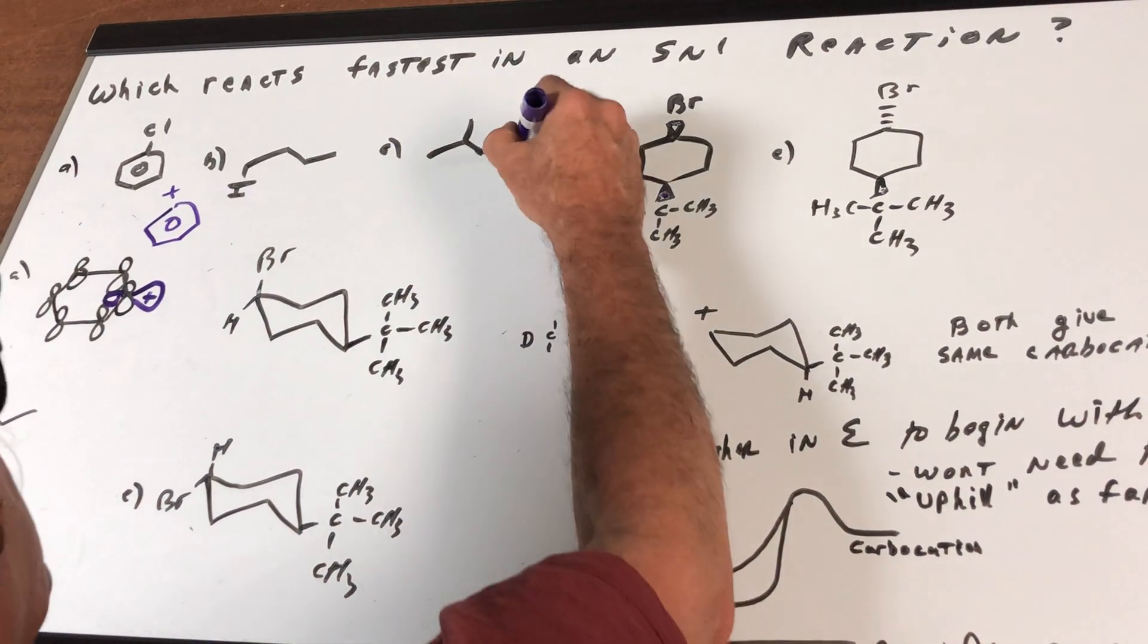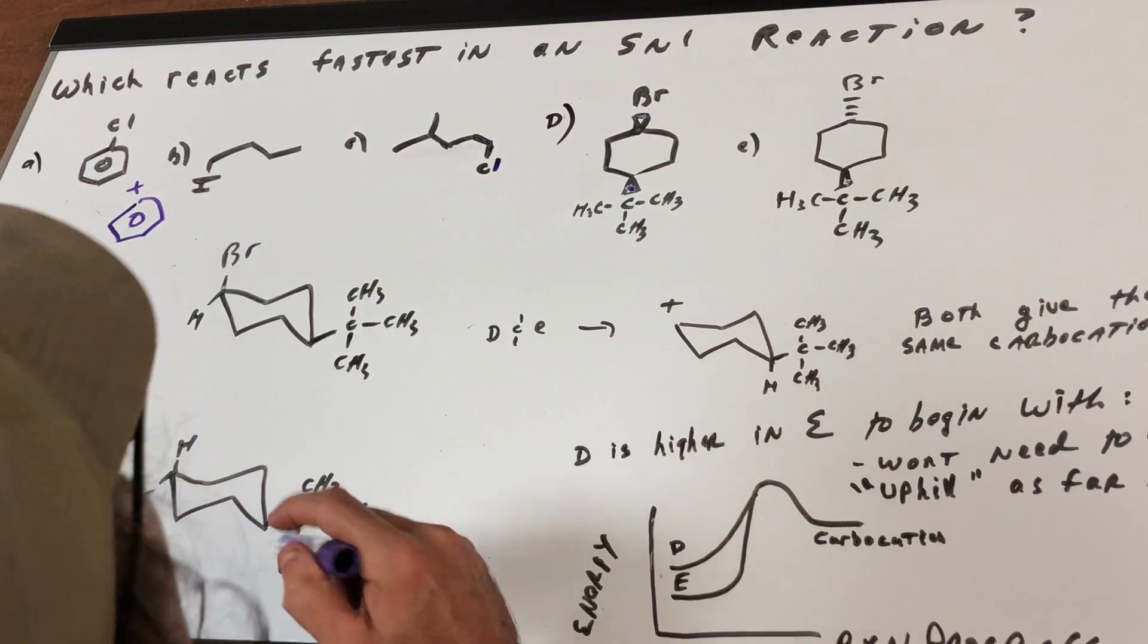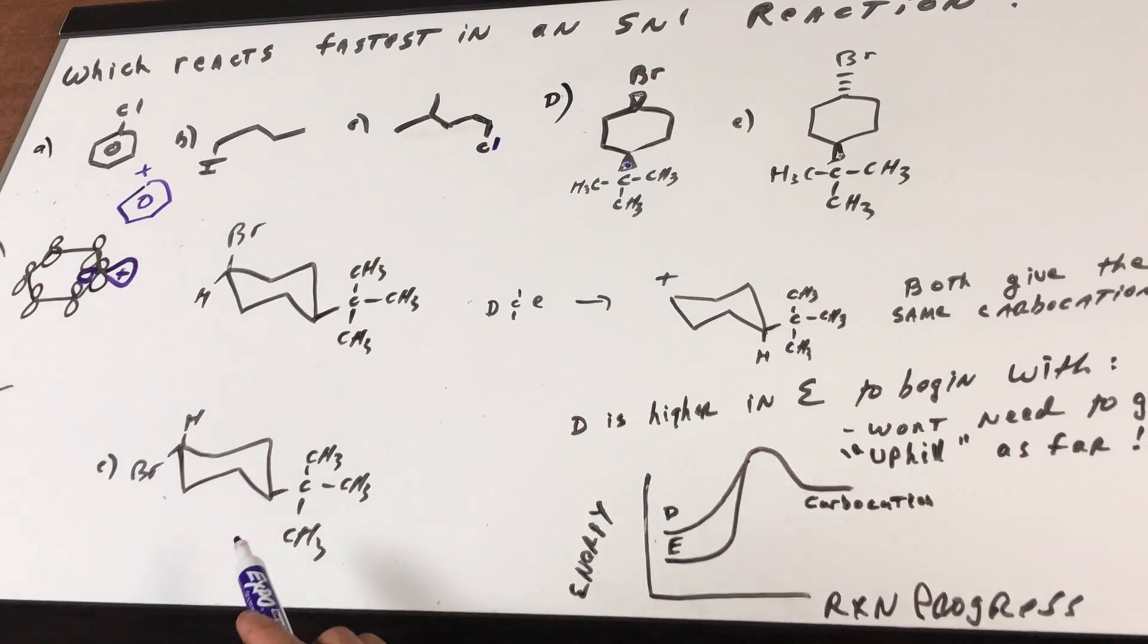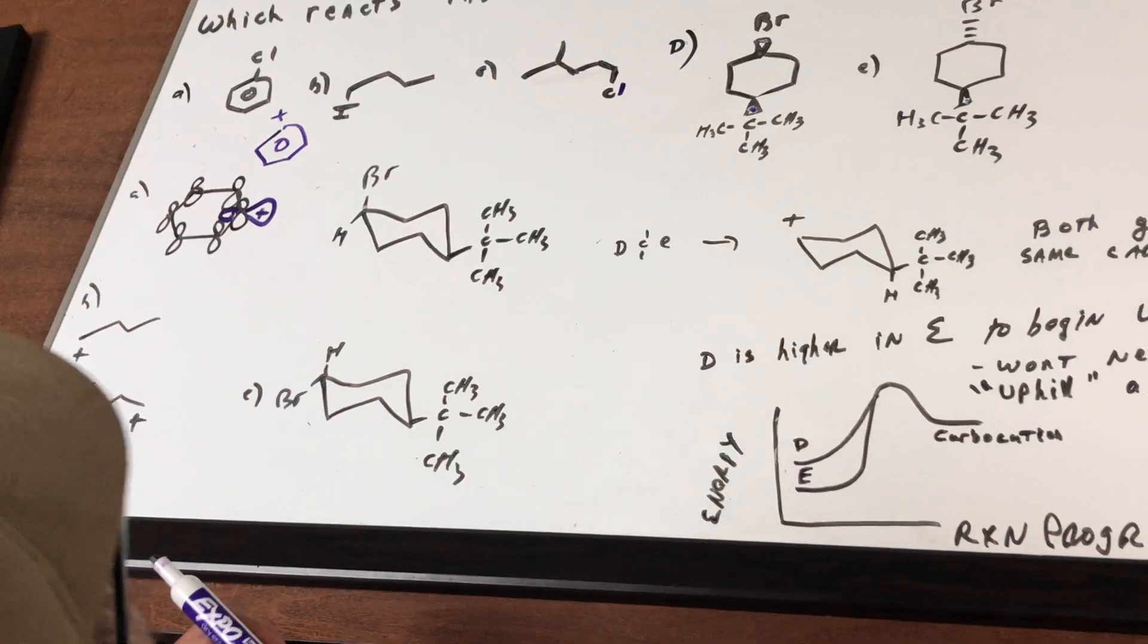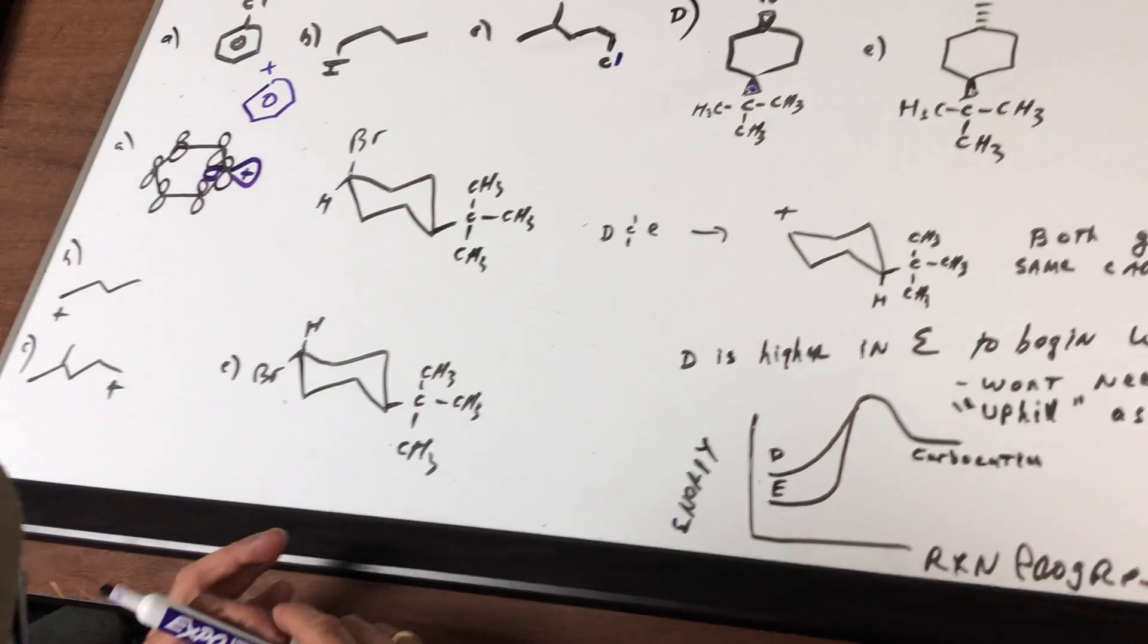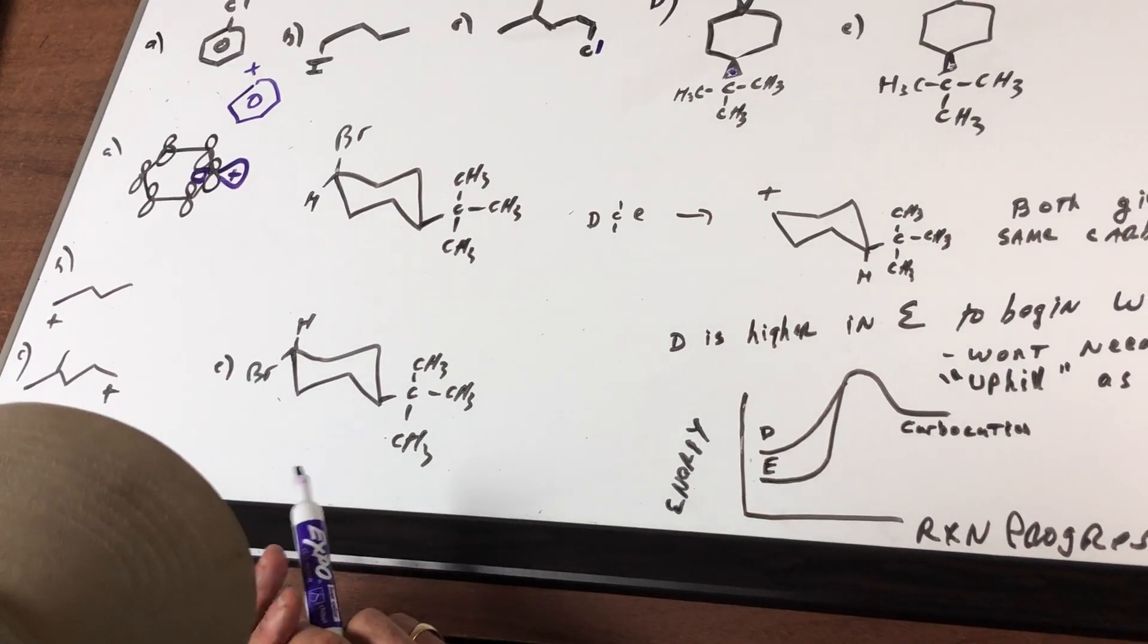B and C would both give primary carbocations, and we all know they are also hideously unstable.